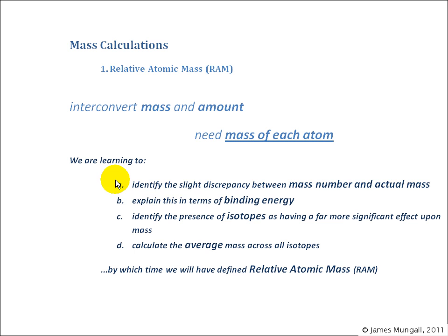We're learning to identify the slight discrepancy between mass number and actual mass, explain this in terms of binding energy, identify the presence of isotopes as having a far more significant effect upon mass, calculate the average mass across all isotopes, by which time we will have defined relative atomic mass, and that's a working mass that we can use to interconvert mass and amount.